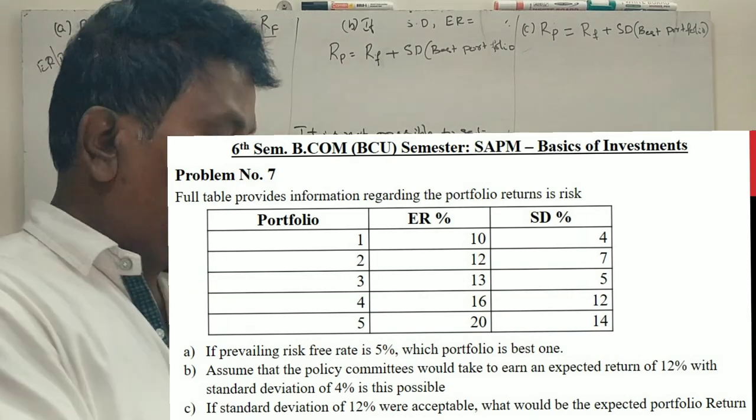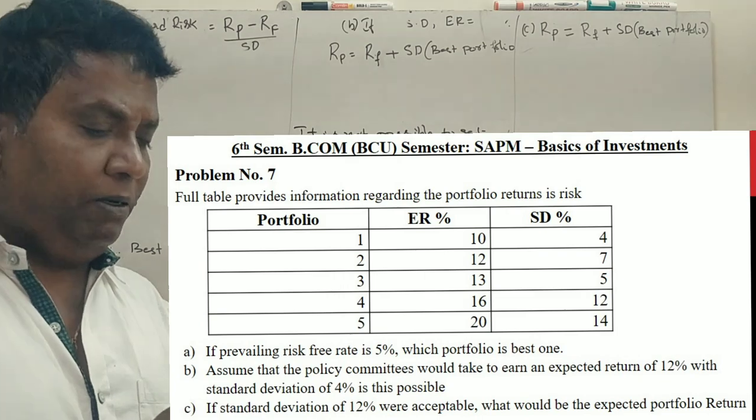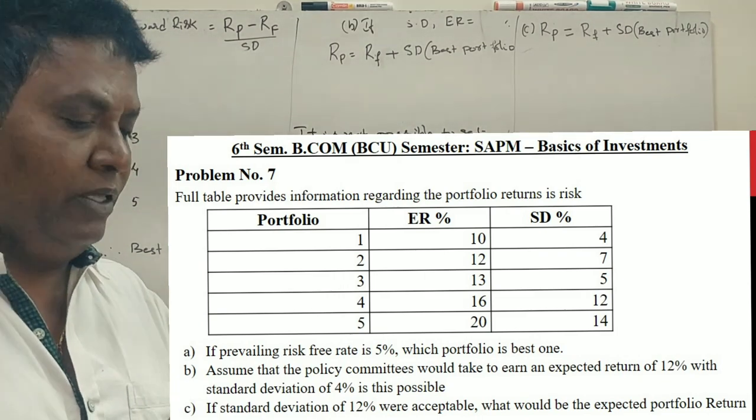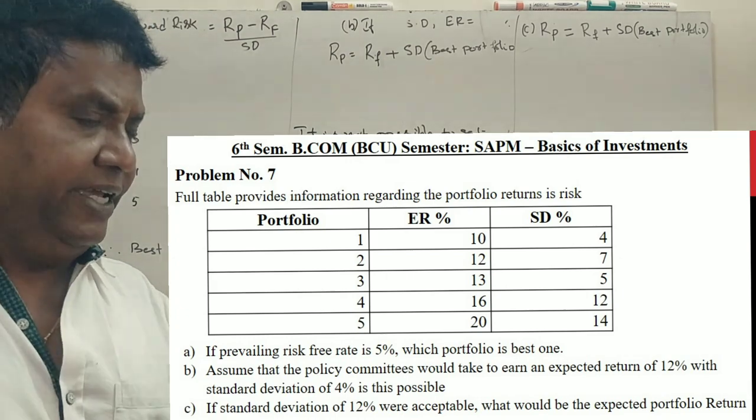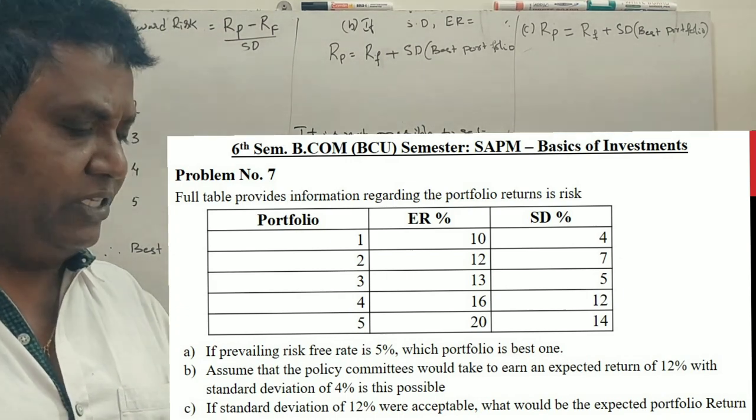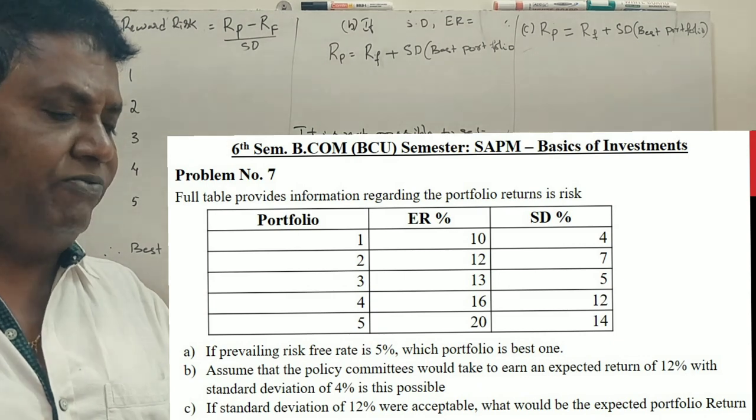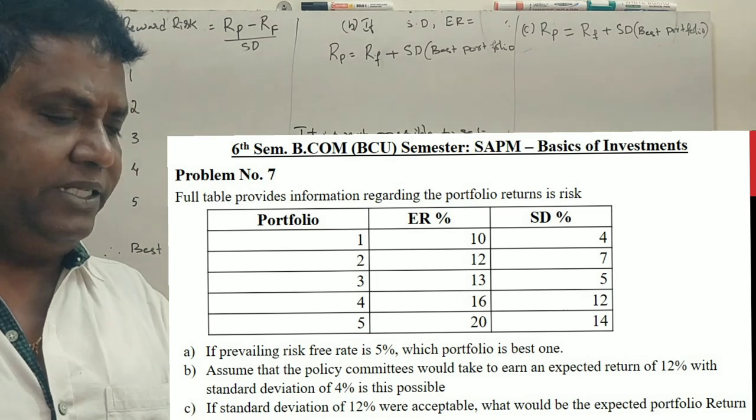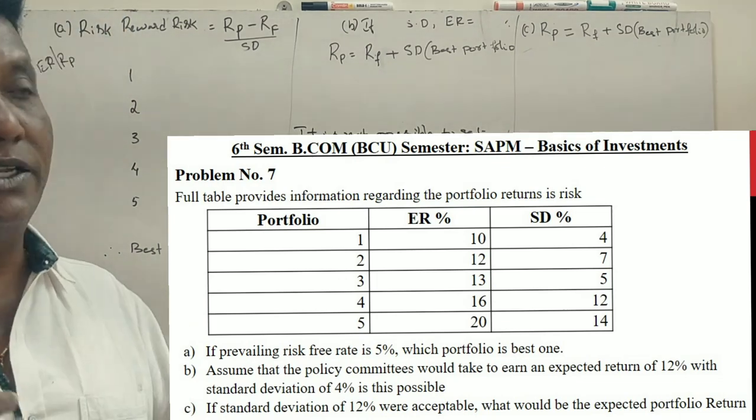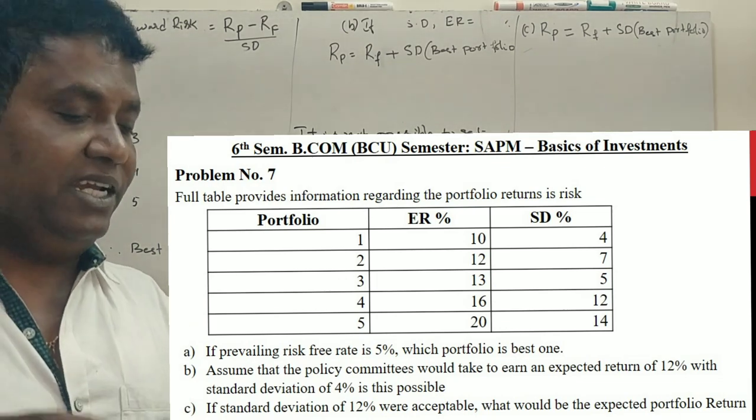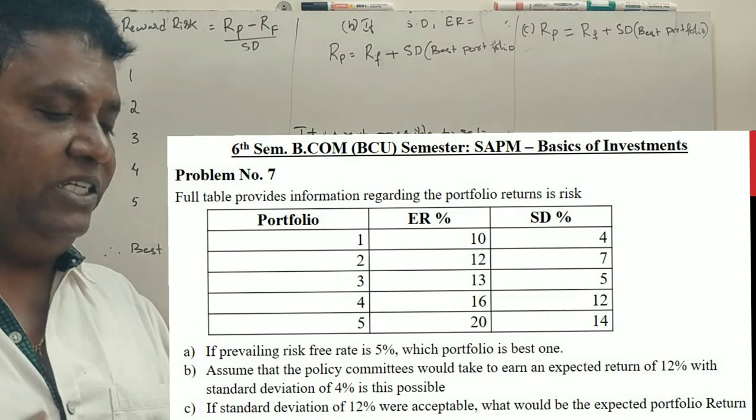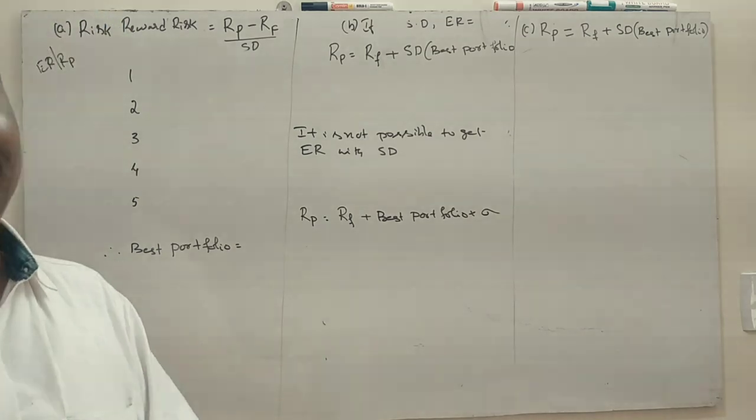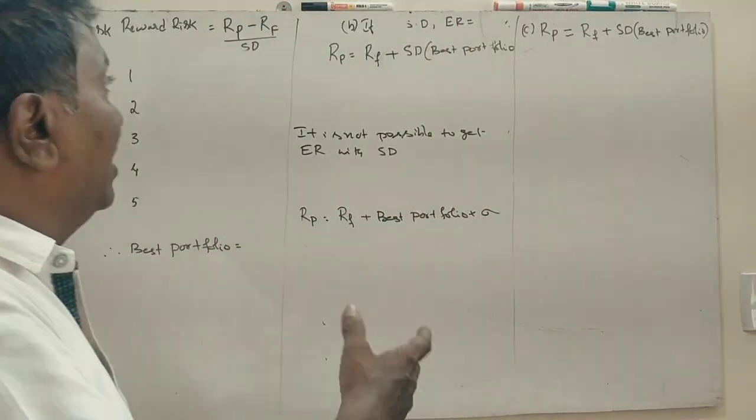So this question: full table provides information regarding portfolio returns and risk. Portfolios 1, 2, 3, 4, 5 with expected return and standard deviation. If risk-free return is 5%, which portfolio is the best one? Assuming that the policy committee wants to earn an expected return of 12% with standard deviation of 4%, is this possible? If standard deviation is 12%, what would be the expected return? So this is the same question with different numbers.